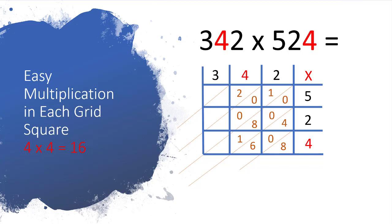So you can see this method you're only doing very simple multiplications. Let's move across to that final column. 3 times 5 is 15, and then 3 times 2 is 6, and then 3 times 4 is 12. So there's our grid all completed.